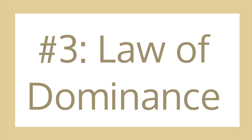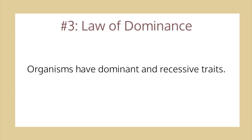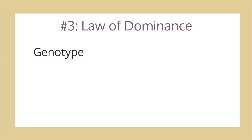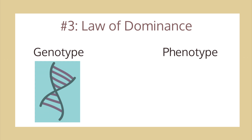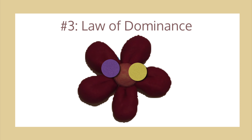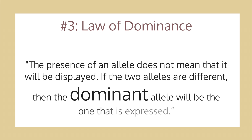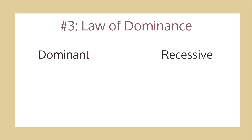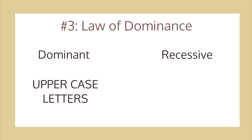The Law of Dominance is the third of Mendel's laws. It refers to the dominant and recessive traits that an organism has. Every organism has both a genotype and a phenotype. The genotype is the DNA sequence that determines an organism's characteristics. These physical characteristics are known as the phenotype. With white and purple peas, though the offspring had alleles from both plants, only one of the alleles was displayed. This is because the presence of an allele does not mean that it will be displayed. If the two alleles are different, then the dominant allele will be the one that is expressed. Scientists write the dominant alleles in uppercase letters and the recessive alleles in lowercase letters.